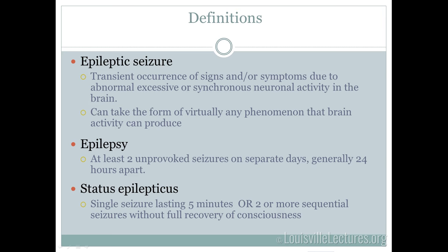Epilepsy by definition is anyone who has had at least two seizures in their lifetime. I cringe when I see 'seizure disorder' — it just means epilepsy. Patients sometimes think epilepsy only affects children, but it just means they've had more than two seizures. I relate it to patients: if you have high blood sugar, you have diabetes; if you have seizures, you have epilepsy. Status epilepticus is a single seizure lasting longer than five minutes, or two back-to-back seizures without return to baseline between them.